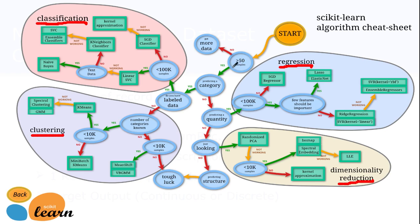If you have labeled data and want a continuous output value, you can use a regression algorithm implemented inside the sklearn library — such as linear regression, nonlinear regression, SGD regression, lasso regression, ensemble regressors, SVR, and ridge regression. There is a whole family of regression-related algorithms implemented inside the sklearn library.